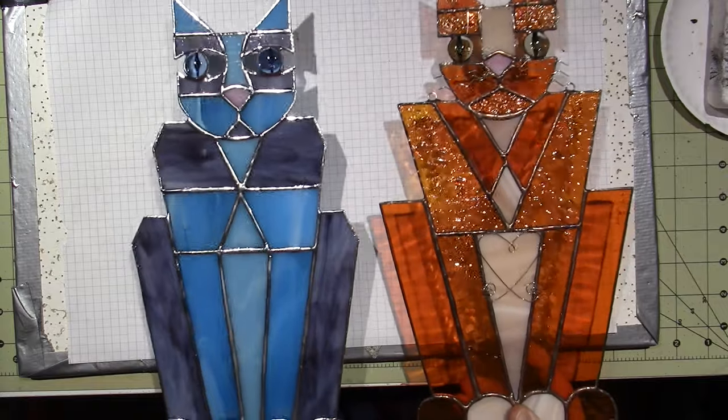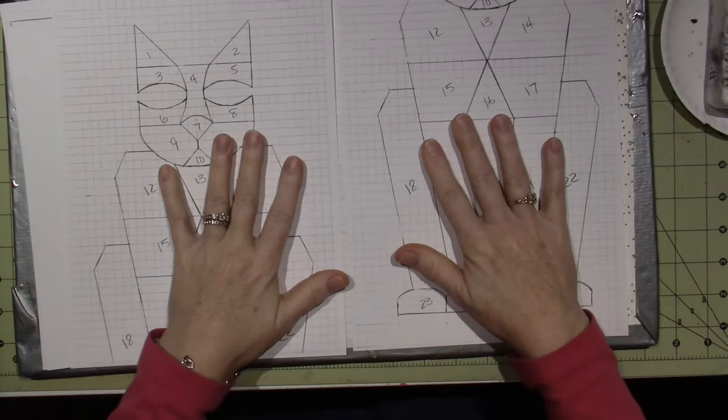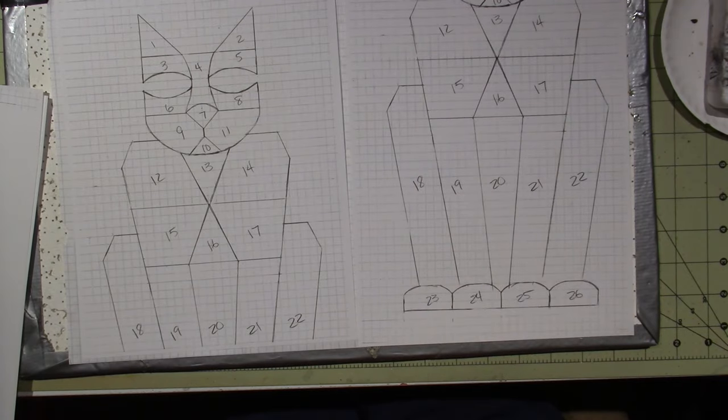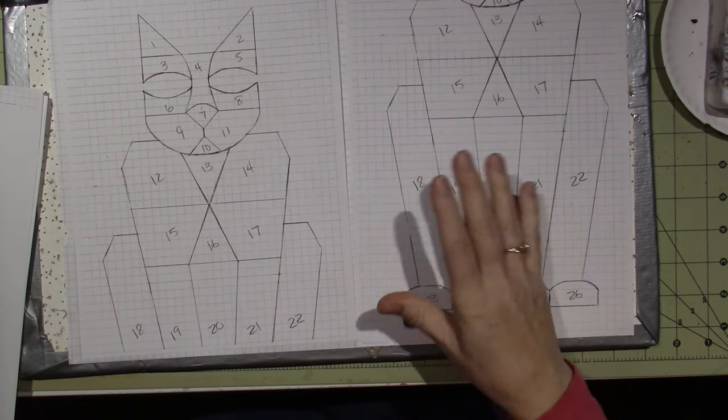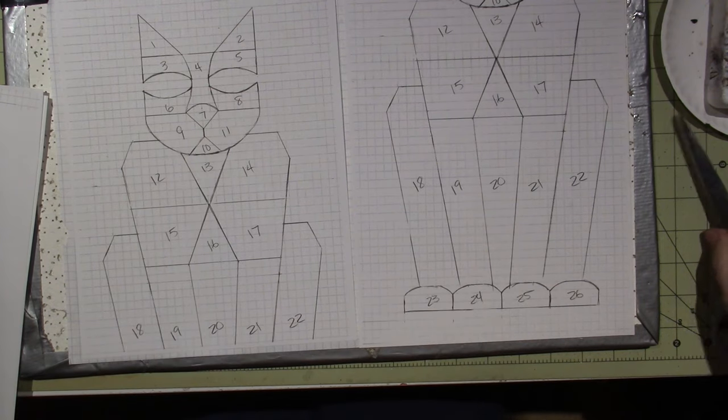So, once you have your pattern, you need to make copies of the pattern, the original pattern. Go to your copy machine. And you're going to, just on copy paper, so here's my cat, get your pattern. So, the first thing you want to do is cut out your pattern. And some people, listen, I'm telling you how I do it, but some people don't do this at all.